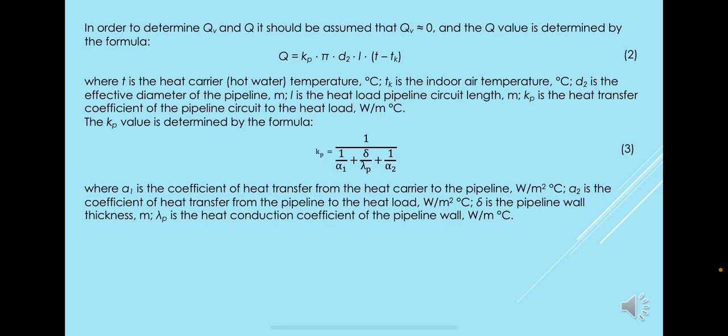In order to determine qv and q, it should be assumed that qv is near zero, and the q value is determined by the formula you can see here. This is formula 2, where T is the heat carrier hot water temperature and is the indoor air temperature.